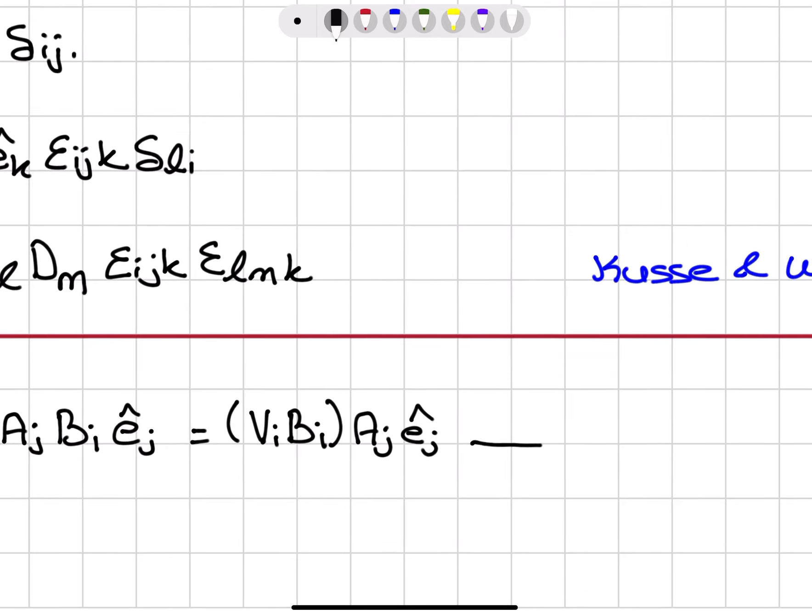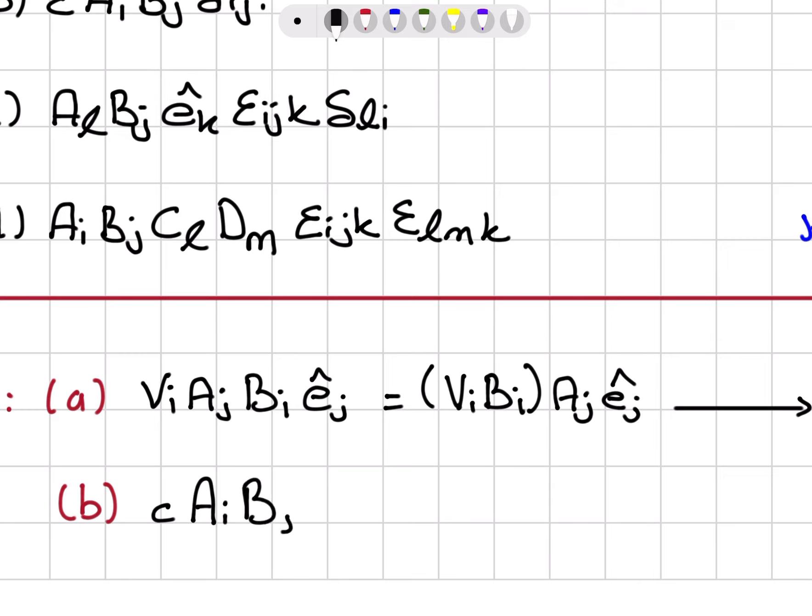We have V_i A_j B_i Ê_j. Now if I regroup the ones that have the same subscript — V_i, B_i — then I have A_j Ê_j.